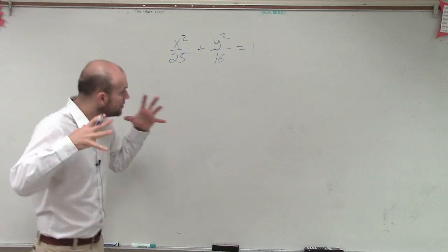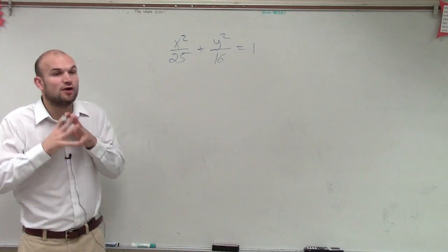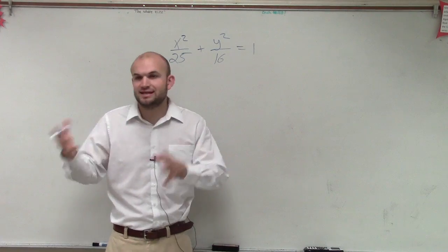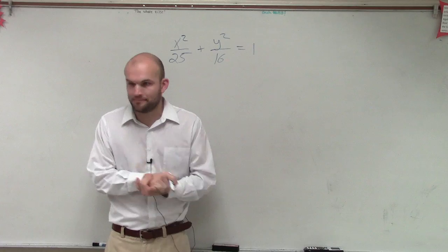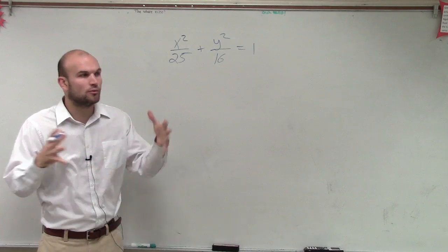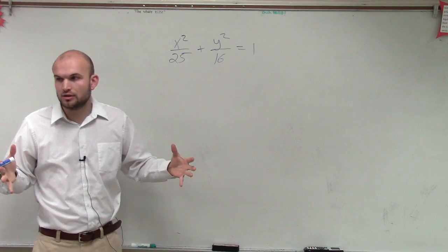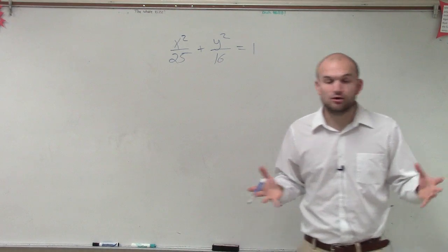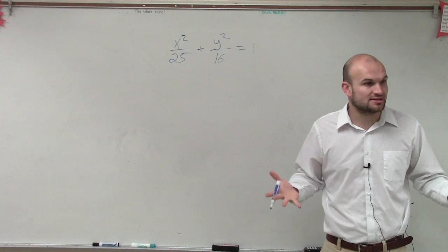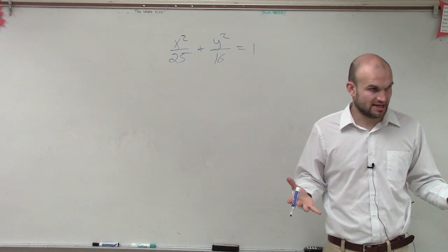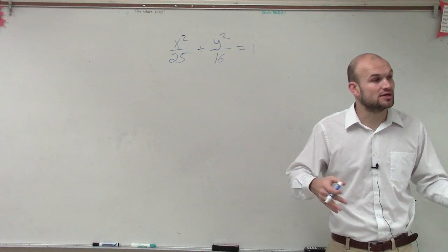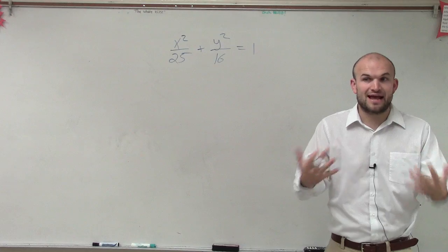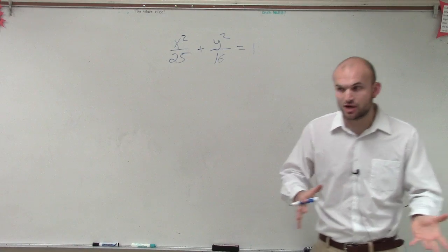So the first thing we look at is, remember our formula, we had two formulas. x minus h squared divided by a squared plus y minus k squared divided by b squared. So what we want to do is remember when we were looking at a picture of our ellipse, we knew that a was, or 2a was the length of our major axis. And then 2b was the length of your minor axis. So on our denominator, we either have a squared or b squared. Which one's larger, a or b?